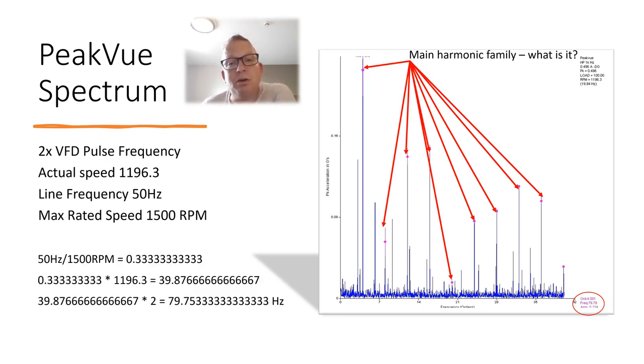So what we've got to keep an eye out for is the electrical firing frequency, two times the pole frequency, which can be noisy on some motors, especially if it's not got the best cables installed. So 50 divided by 1500 gives us 0.0333 recurring, times that by the actual speed, and times by two because we've got north and south, gives us 79.75 hertz, which is this frequency here.